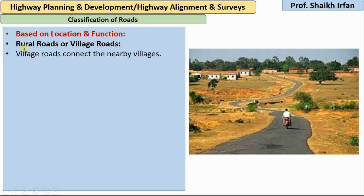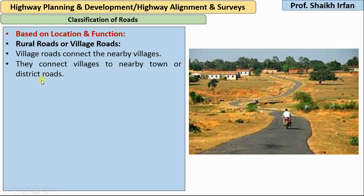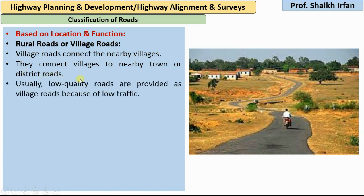The last type of road based on location and function are rural roads or village roads. Village roads connect nearby villages to upper-level roads, linking villages to the nearby town or district roads. Rural roads are the lowest level depending upon location and function, and they are usually low quality roads because traffic is very low.